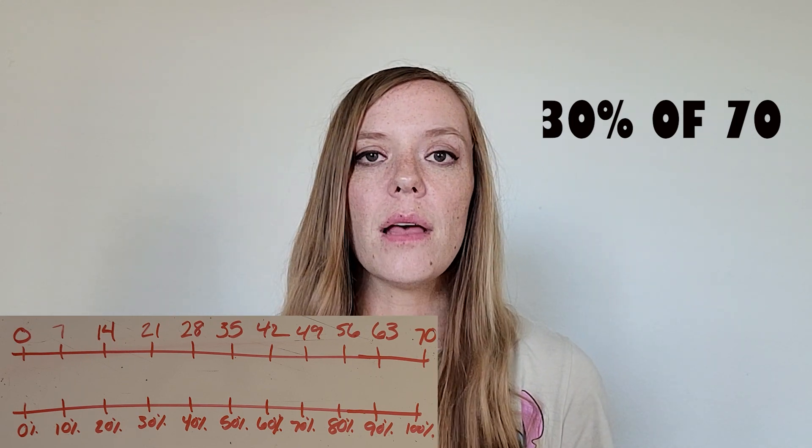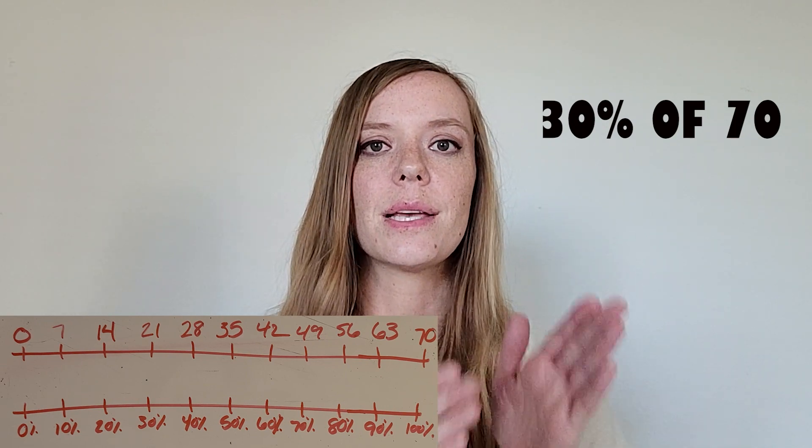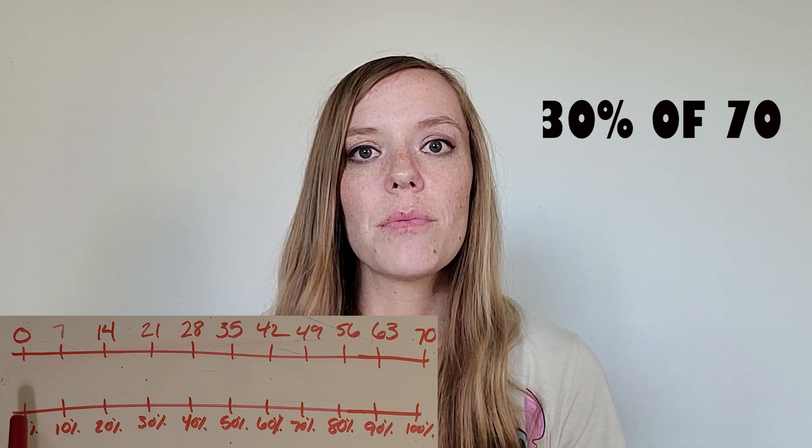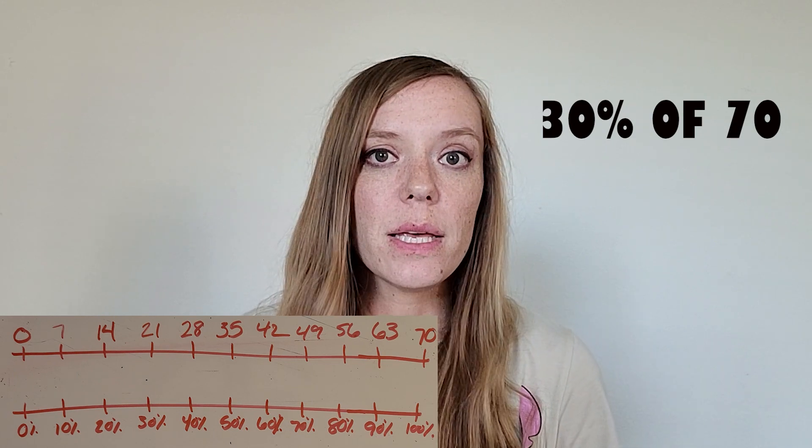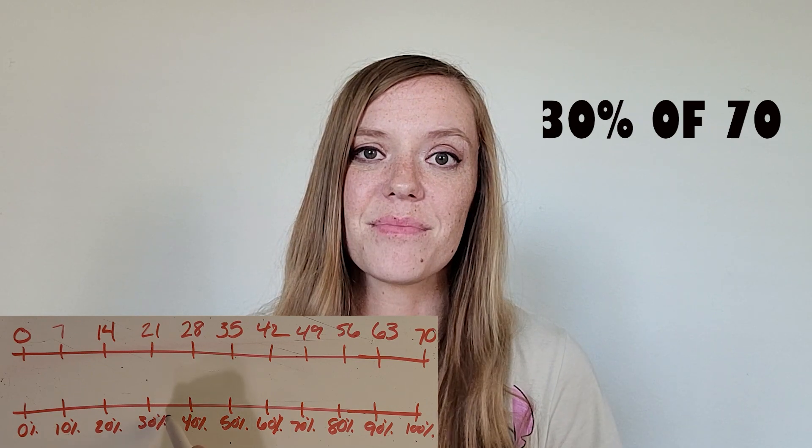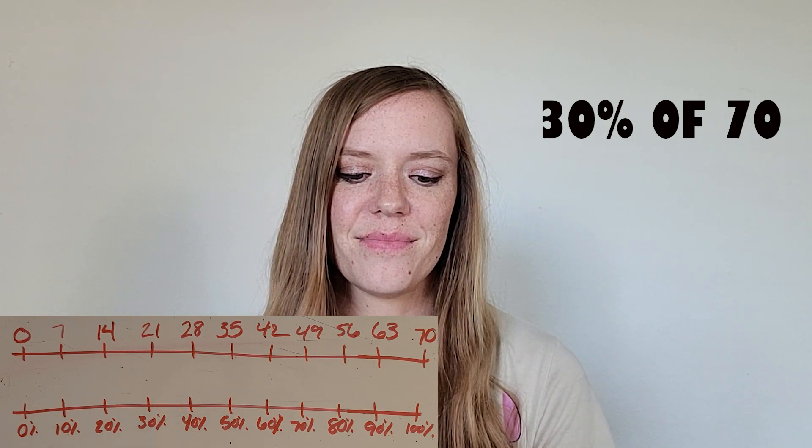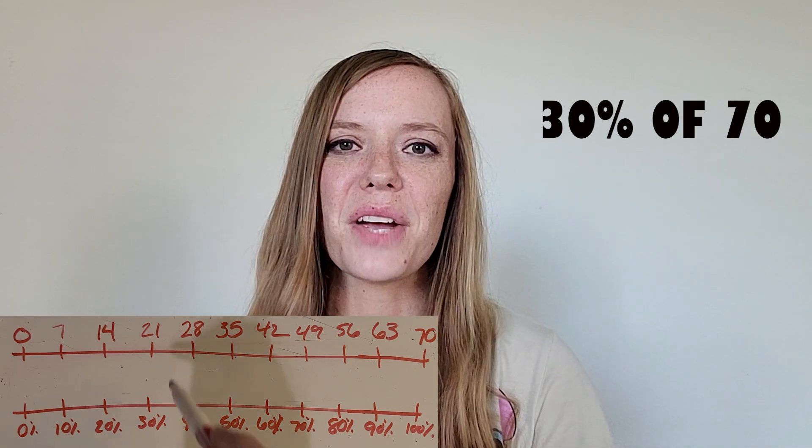Now I love this double number line because every amount is connected to or related to a percent. So now all it takes is looking for it. So what is 30 percent of 70? What matches up with 30 percent? Okay awesome, it's 21. Great job.